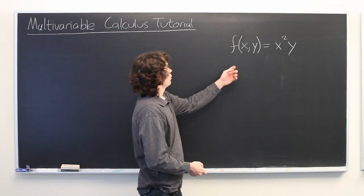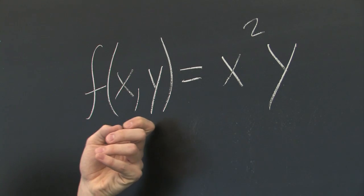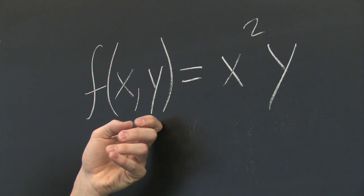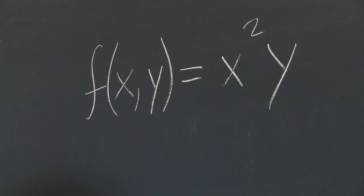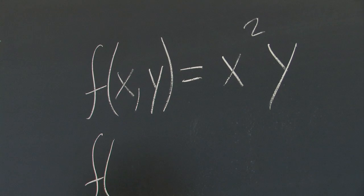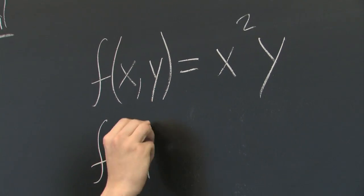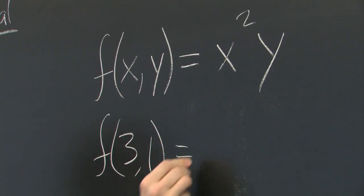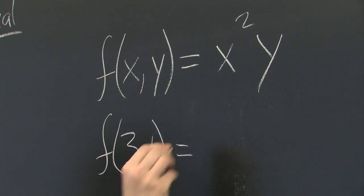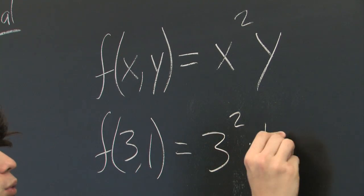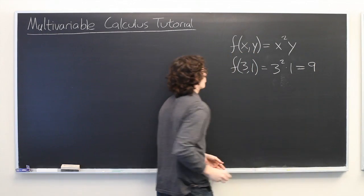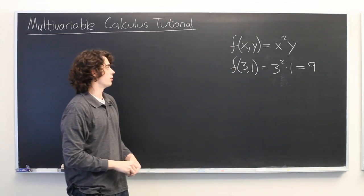First, let's take a look at this function f, which takes x and y and produces a number. So, for example, you might see f(3,1), which would indicate that we put in 3 squared times 1, which is equal to 9.